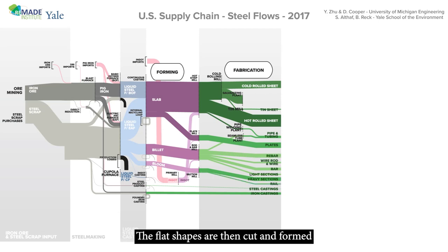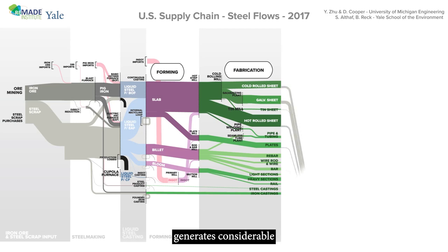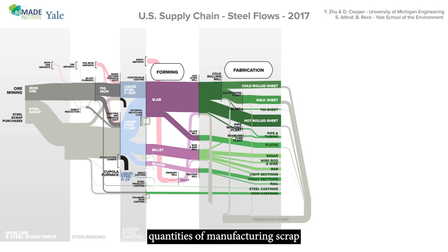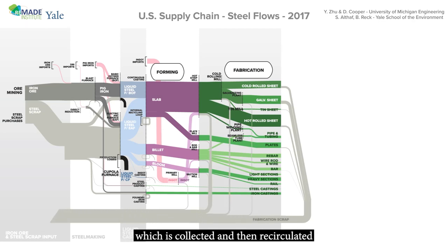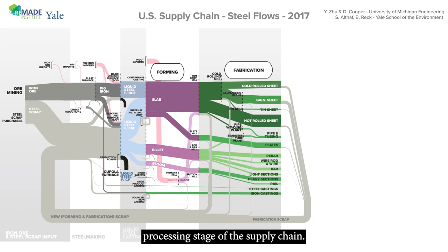The flat shapes are then cut and formed to produce component shapes. For example, flat galvanized sheet is stamped to make curved automotive door panels. This conversion generates considerable quantities of manufacturing scrap, which is collected and then recirculated to the liquid metal processing stage of the supply chain.